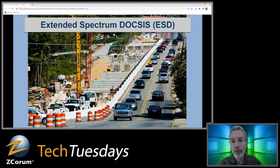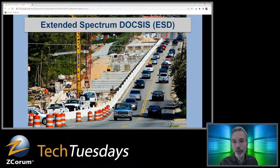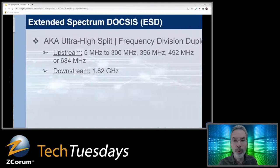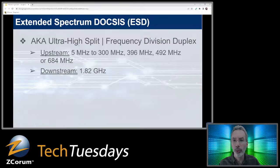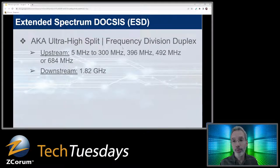Then there's Extended Spectrum DOCSIS. This is part of the DOCSIS 4.0 spec. ESD — Extended Spectrum DOCSIS — basically takes that same frequency division duplexing but expands the lanes even further. The goal is to get more upstream without borrowing from downstream — instead, increase the full spectrum so you can carry more data upstream. Some call this an ultra high split; some call it frequency division duplex or FDD, which is a bit confusing since FDD is really what they've been doing all along — separating upstream and downstream channels with a diplex filter and sending everything down the same cable in different parts of the spectrum.